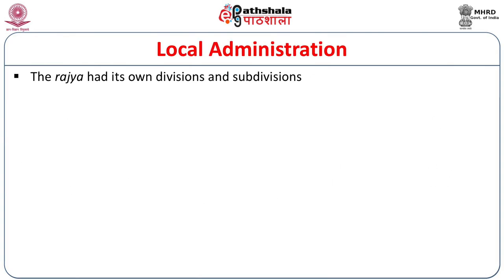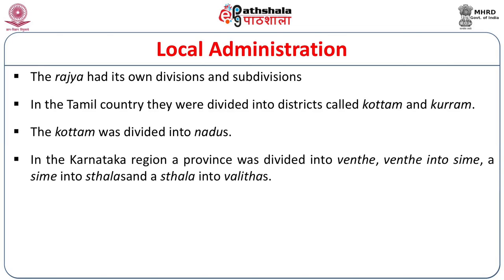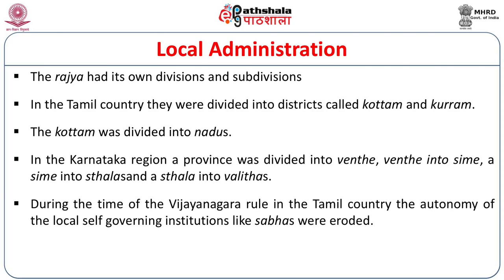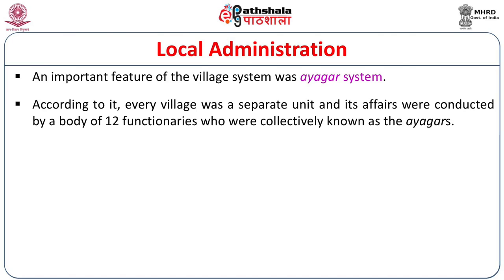The provinces or Rajya had their own divisions and subdivisions. In the Tamil country, they were divided into districts called Kottam and Kutram, and the Kottams were divided into Nadus. In the Karnataka region, the province was divided into Vente, then into Sime, then into Sthalas, and Sthala into Valitas. During Vijayanagara rule in the Tamil country, the autonomy of local self-governing institutions — which had been very important during the Chola period — was eroded. The autonomous institutions lost their position. Another important feature of the village system was the Ayagar system, according to which every village had its affairs conducted by a group of 12 functionaries.